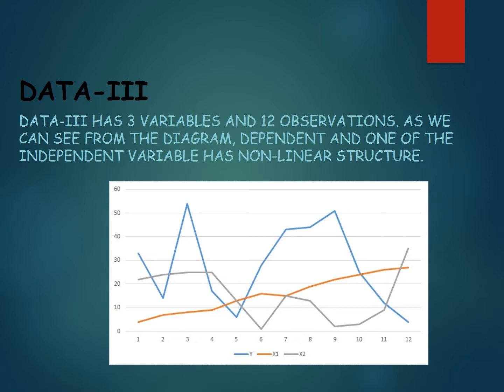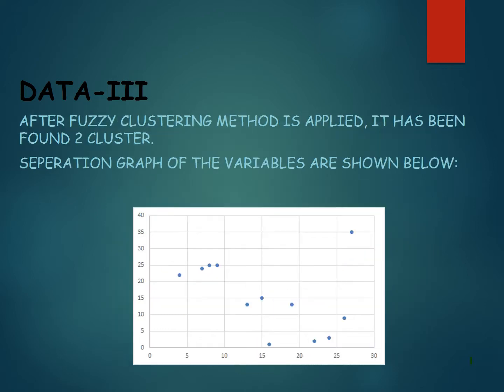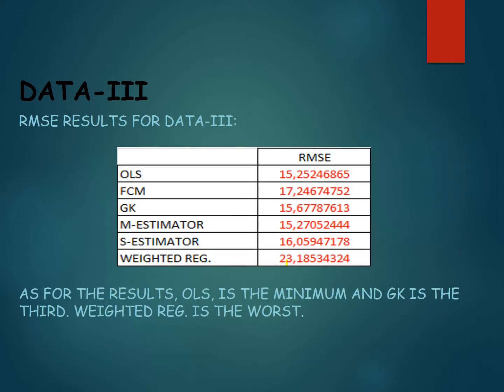Data 3 has three variables and 12 observations. As you can see from the diagram, the dependent and one of the independent variables have a non-linear structure. After the fuzzy clustering method is applied, two clusters are found. The RMSE results show that ordinary least squares is the minimum, Gustafson-Kessel is third, and weighted regression has a very bad score.